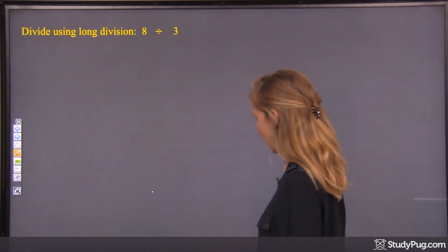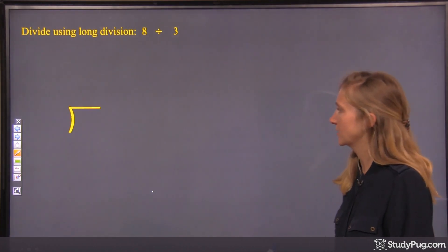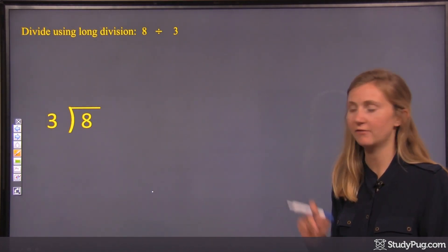Divide using long division: 8 divided by 3. Okay, so if we had a long division, that would look like that. 8 divided by 3.